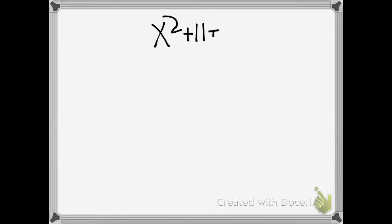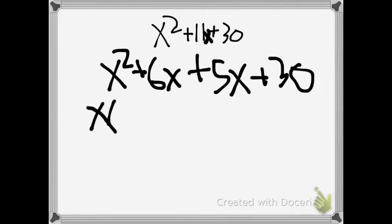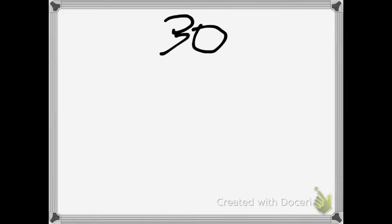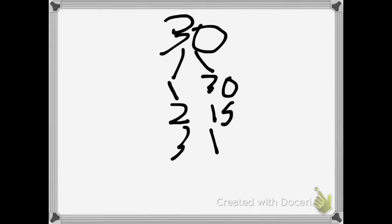Now to start solving this, we have to factor 30 to see if any of them add up to 11. Let's see, factors of 30: 1 and 30, 2 and 15, 3 and 10, and 6 and 5.